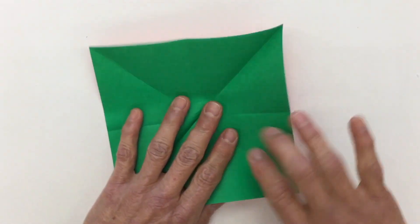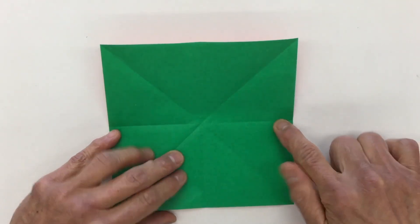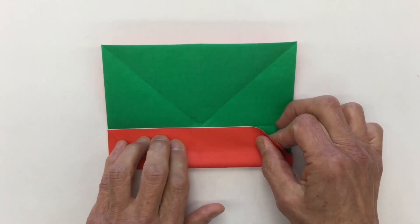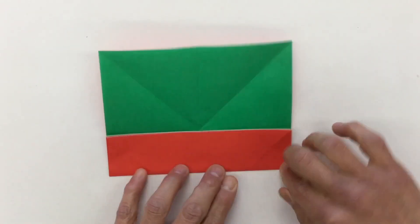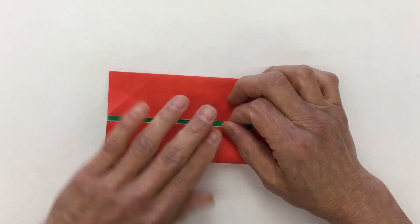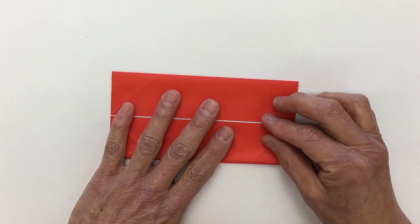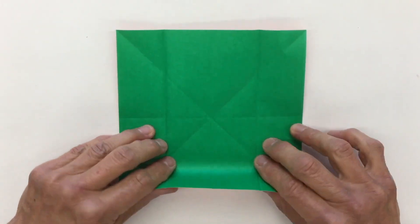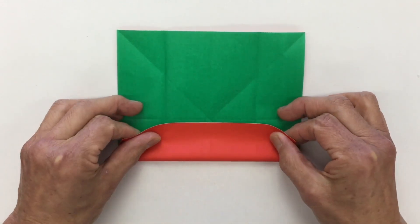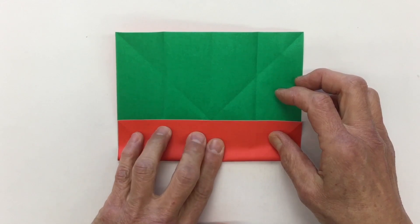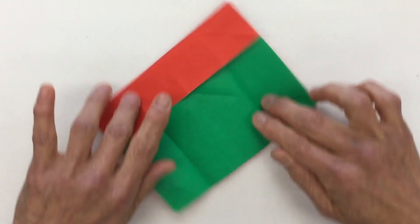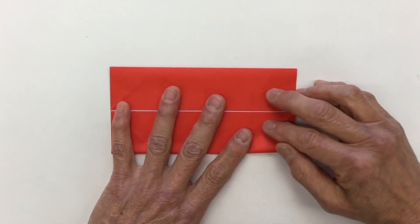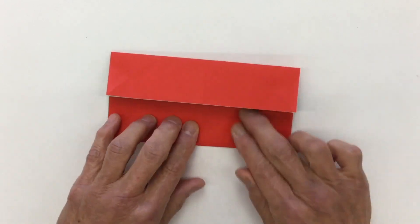We're folding to this center crease line here. Just the edge touches it. Holding place, crease, shift. These two edges touch, not overlap. Hold in place, crease, open. Now two folds in this direction. Very symmetrical. Crease, shift. They just touch, no overlapping. Crease.